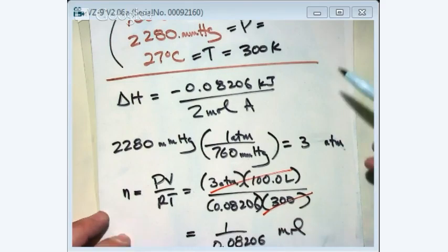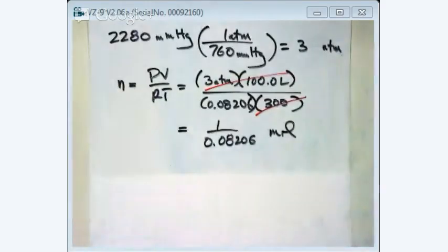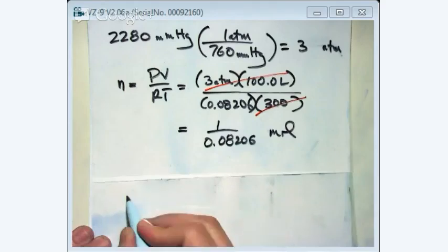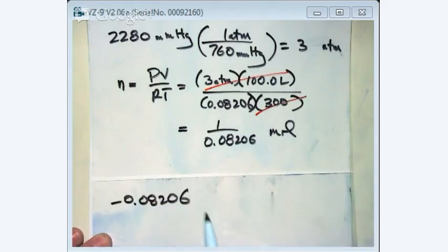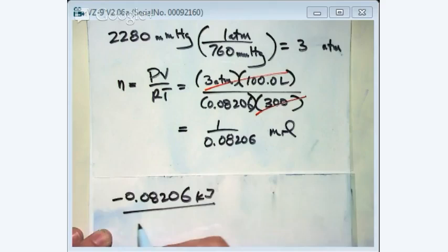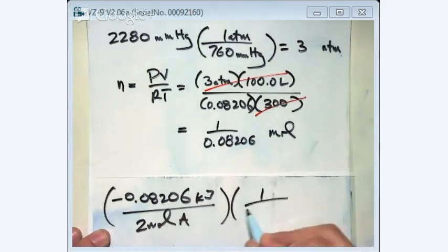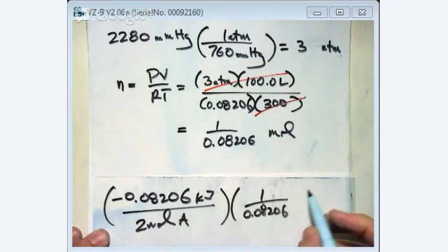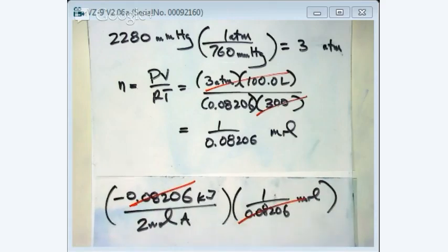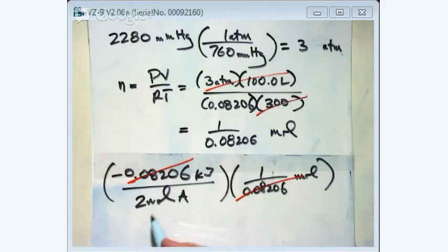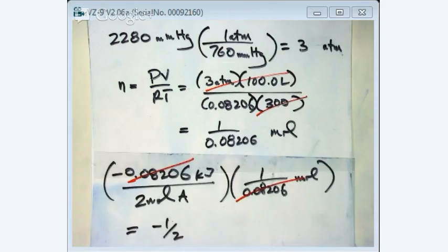It looks like three times 100 will be 300. Oh perfect. This will turn out to be 1 over 0.08206 moles. And then I need to, let's go to the next page. Now I go back to my delta H, negative 0.08206. That's kilojoules for two moles of A. Multiply what I knew now by the known moles. Well I have 1 over 0.08206 moles. Oh perfect. Somebody must have designed this problem. That cancels. And it's going to be really a half. Minus one half. Since the question said how much is liberated, it's just reporting the answer as positive.